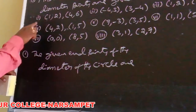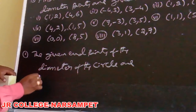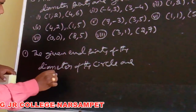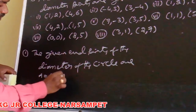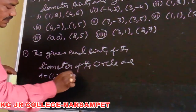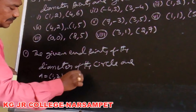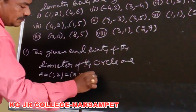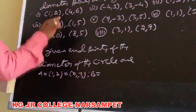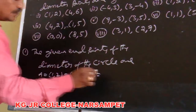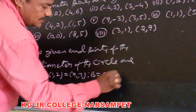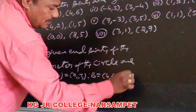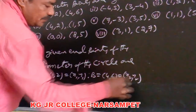We consider the first point coordinates: A = (1, 2), so this is (x1, y1). And the other endpoint is (4, 6), so these coordinates are (x2, y2).